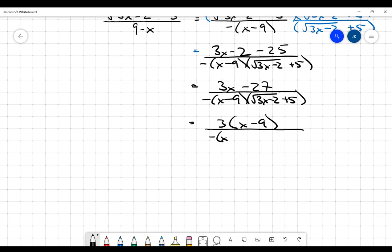So I've got this negative x minus 9 down here, square root of 3x minus 2 plus 5, and now that x minus 9 factor is going to cancel.